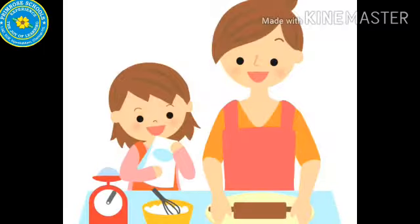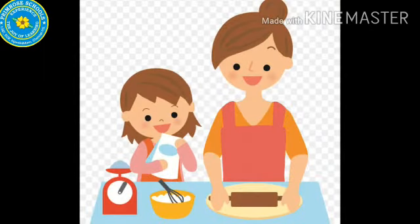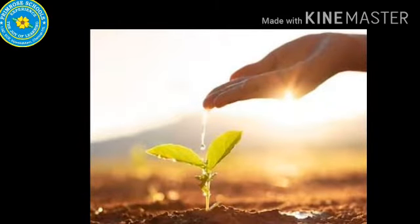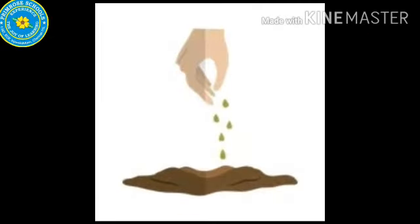She went home and told this to her mother. Her mother gave her some dry peas and told her that it is your responsibility to take care of the plant and I will only guide you. Neha agreed to this, sowed the dry peas, and watered the plant.